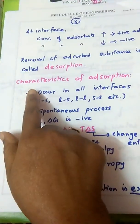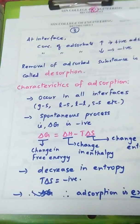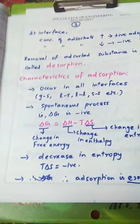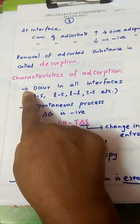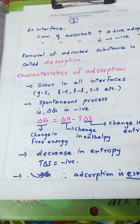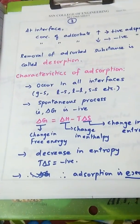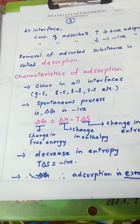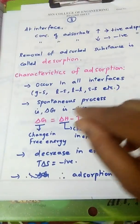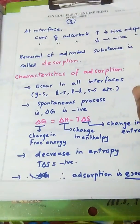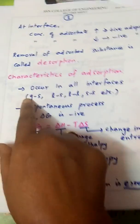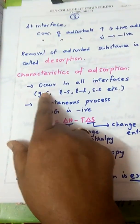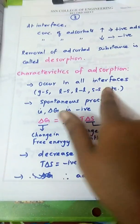Now we will discuss the characteristics of adsorption. The first point: adsorption occurs at all interfaces. Whatever may be the point of contact between two phases — which is called an interface — adsorption is possible there. The phases may be solids, liquids, or gases; for example, gas-solid, liquid-solid, liquid-liquid, or solid-solid interfaces.